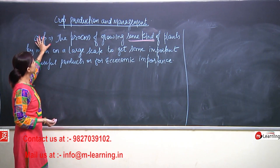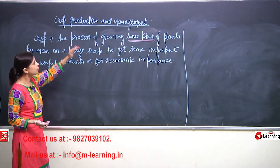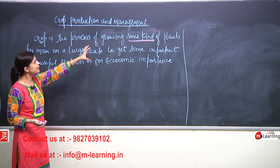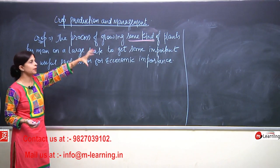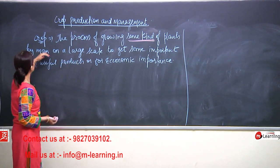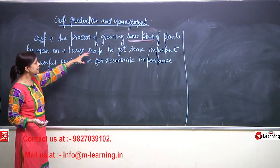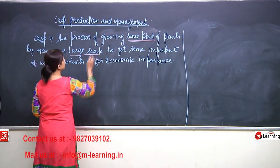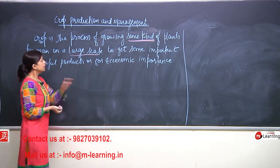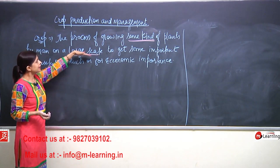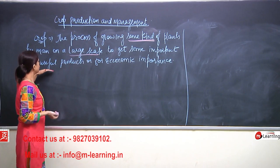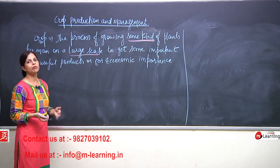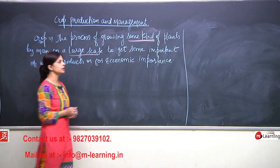To summarize: a crop is the process of growing the same kind of plants by men on a large scale — large scale is an important word — to get some important or useful products, or for economic importance.